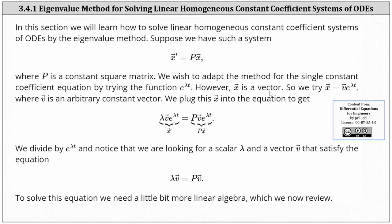However, x is now a vector, so we try vector x equals vector v times e to the lambda t, where vector v is an arbitrary constant vector. We plug x and x prime into the differential equation, where x prime is x prime of t. To find x prime of t, we apply the chain rule, which gives us lambda times vector v times e to the lambda t equals P times vector v times e to the lambda t. Dividing both sides by e to the lambda t, we get lambda times vector v equals P times vector v, which indicates we're looking for a scalar lambda and a vector v that satisfies the equation.